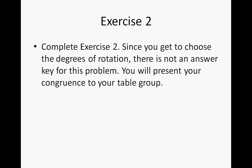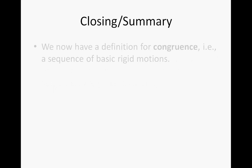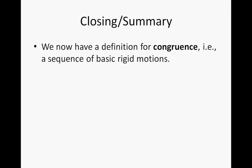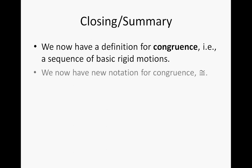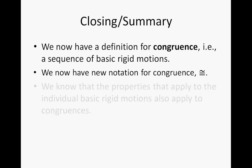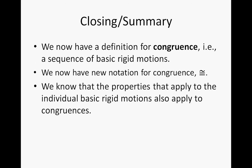For exercise two, complete it on your own — since you get to choose the degree of rotation, there is no answer key, and you will present your congruence to your table group. To summarize: we now have a definition for congruence — a sequence of basic rigid motions — effectively combining definitions of all three basic rigid motions into an overarching definition. We have a new notation for congruence, the equal sign with a squiggle on top, and the properties that apply to individual basic rigid motions also apply to congruences.